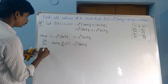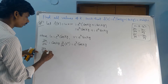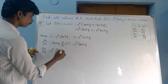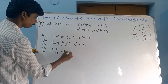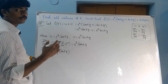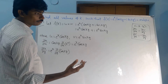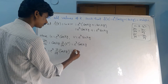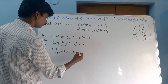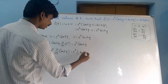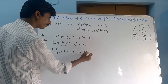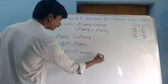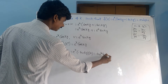Next, ∂u/∂y: we differentiate cos(ky) with respect to y, keeping e^x constant. Since d/dx(cos x) = −sin x, we get e^x · (−sin(ky)) · k, the inner derivative. Therefore ∂u/∂y = −k · e^x · sin(ky).